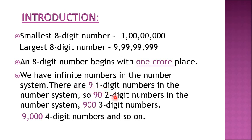Now how many two-digit numbers are there? If we count from the number 10 to the number 99, we get to know that there are ninety two-digit numbers. Next, how many three-digit numbers are there? We need to count from the smallest three-digit number, which is 100, to the largest three-digit number, which is 999. And if we count the numbers, we get 900 three-digit numbers. So here we can find a pattern: there are nine one-digit numbers, ninety two-digit numbers, nine hundred three-digit numbers. Similarly, we can say there are nine thousand four-digit numbers and so on.